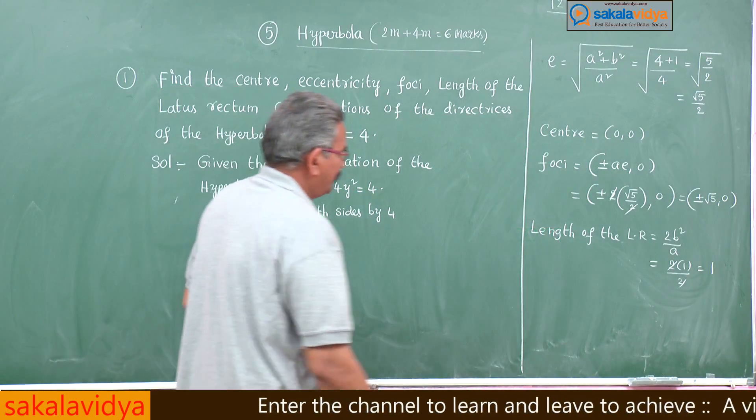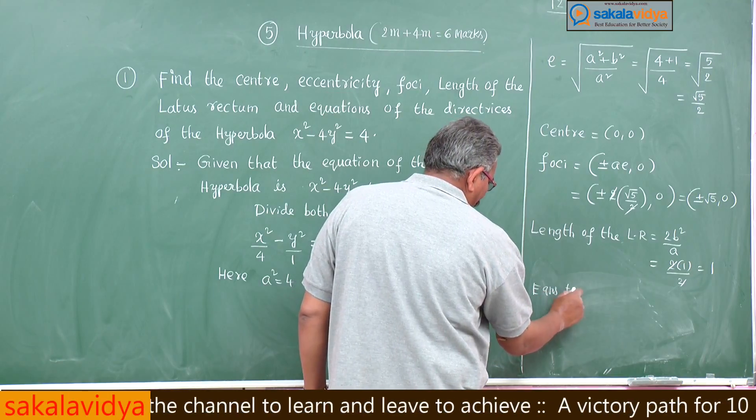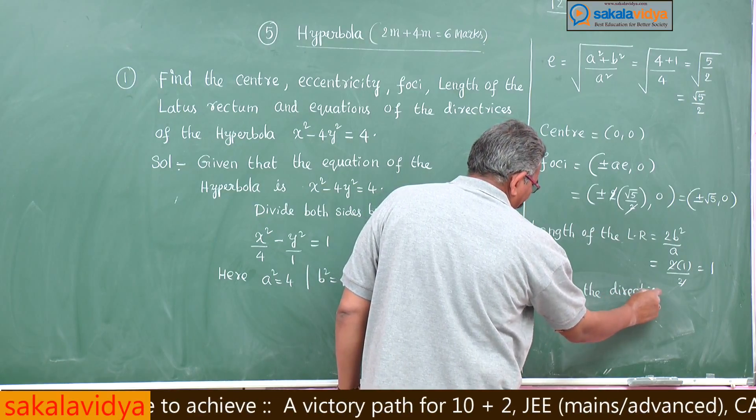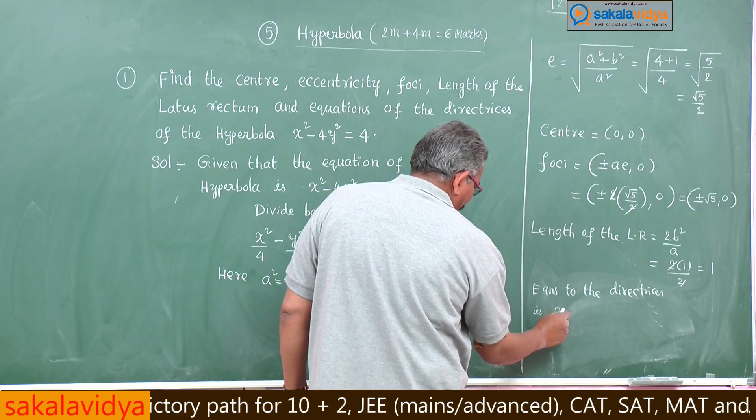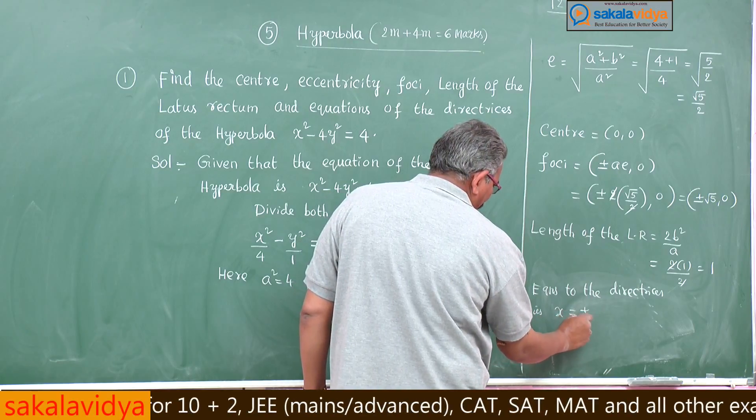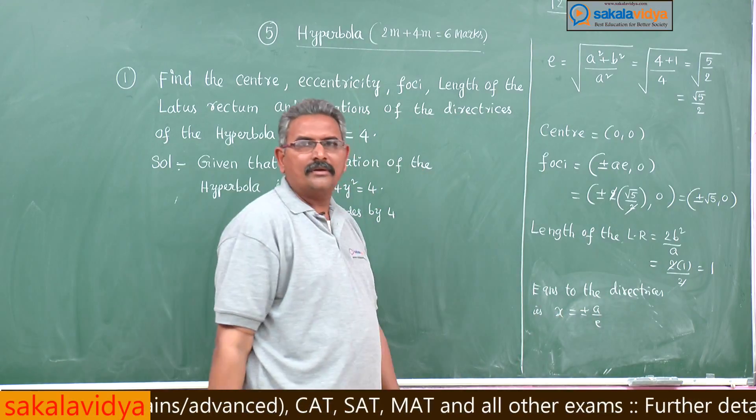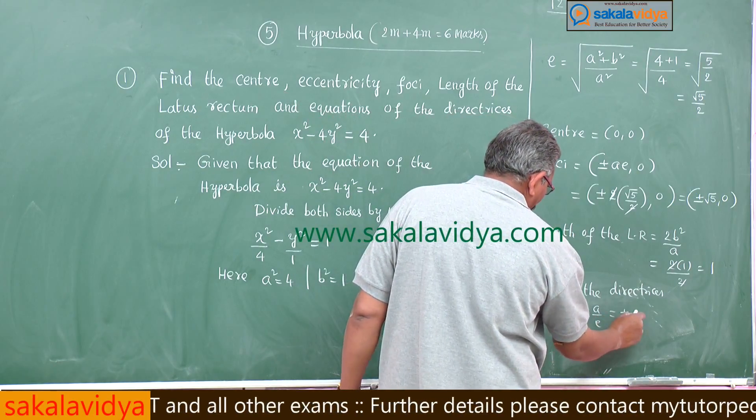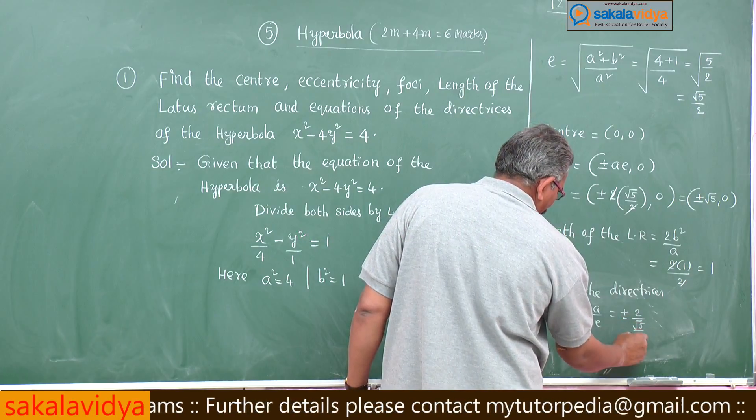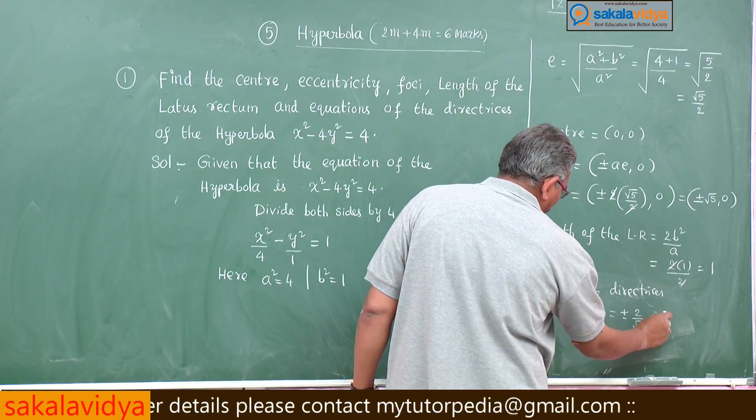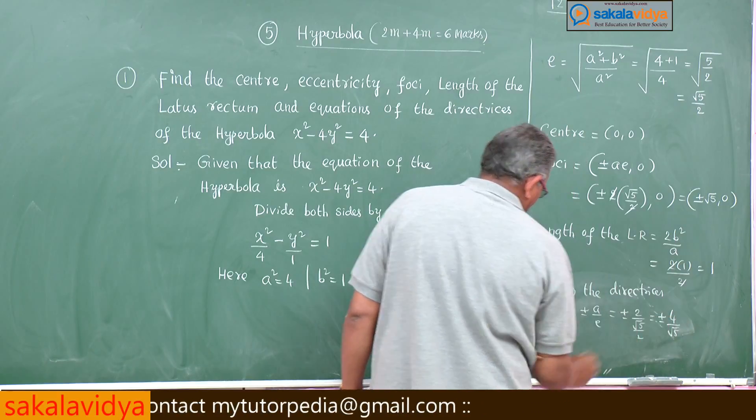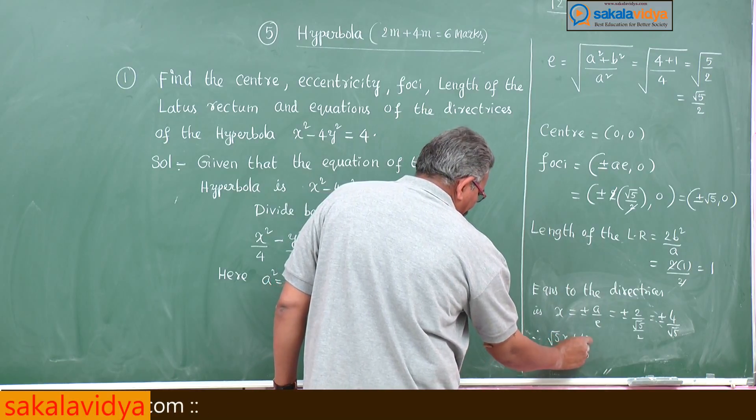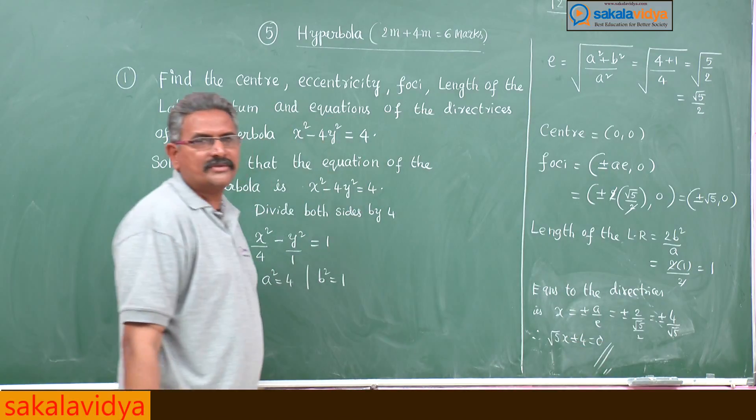Now equations to the directrices. x is equal to plus or minus a by e. a means 2, e means root 5 by 2, this will be plus or minus 4 by root 5. Therefore, root 5x plus or minus 4 is equal to 0. This is the answer.